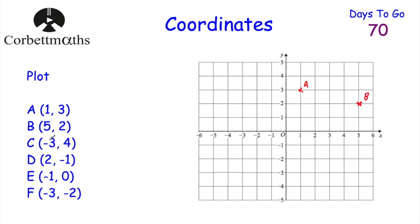Point C's coordinates are negative three, four — so negative three and then up four, that's point C. Point D is two, negative one, so two along and one down — that's point D. Point E is negative one, zero, so that's just going to be negative one, and because it's zero we're not going up or down — that's point E. And finally, F at negative three, negative two would be there — that's point F. Well done if you got those.